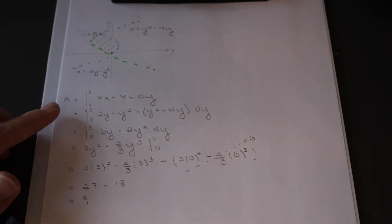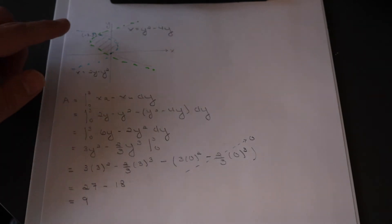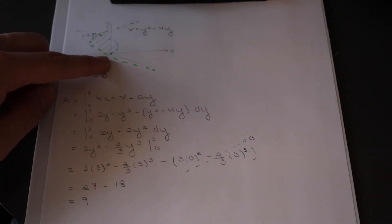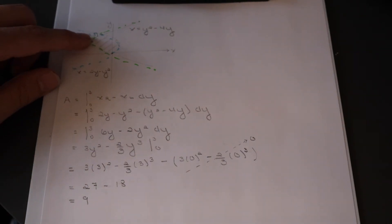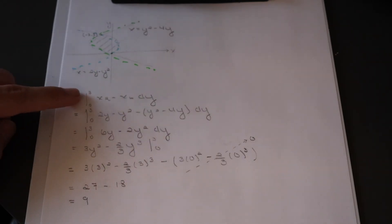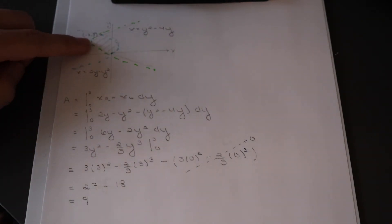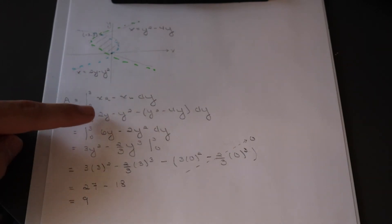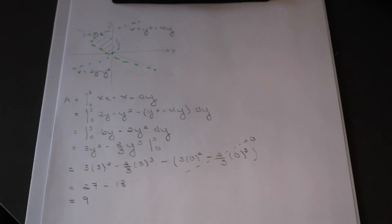With both curves labeled, let's set up our bounds. We have intersection points at (−3, 3) and (0, 0). Because we're integrating in terms of y this time, we use y-bounds: y = 3 is our upper bound b, and y = 0 is our lower bound a. Then we integrate x-right minus x-left — blue minus green — with respect to dy.